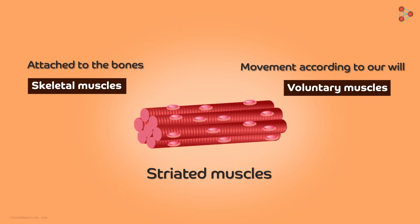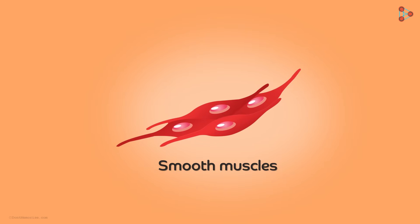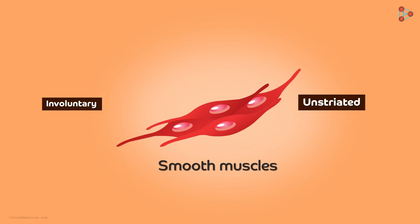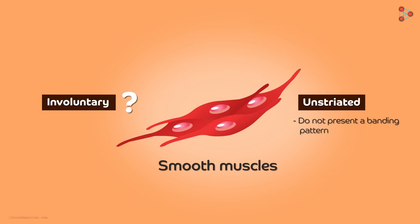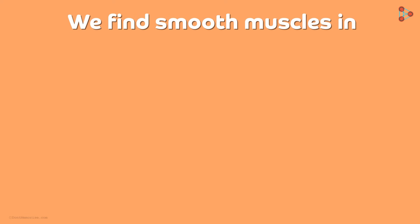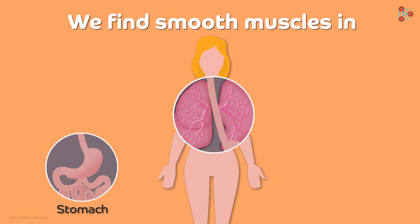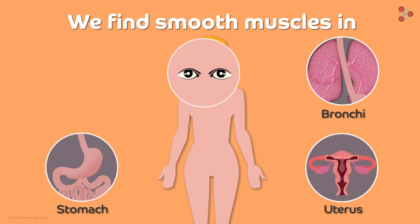The next type is smooth muscles, also called unstriated and involuntary. They do not present a banding pattern like the striated ones when stained and observed under a microscope. Instead, they have long spindle-shaped uninucleate cells. Their activities are not under our control. We find smooth muscles in the stomach, in the bronchi, in the uterus, and also in the iris of eyes.